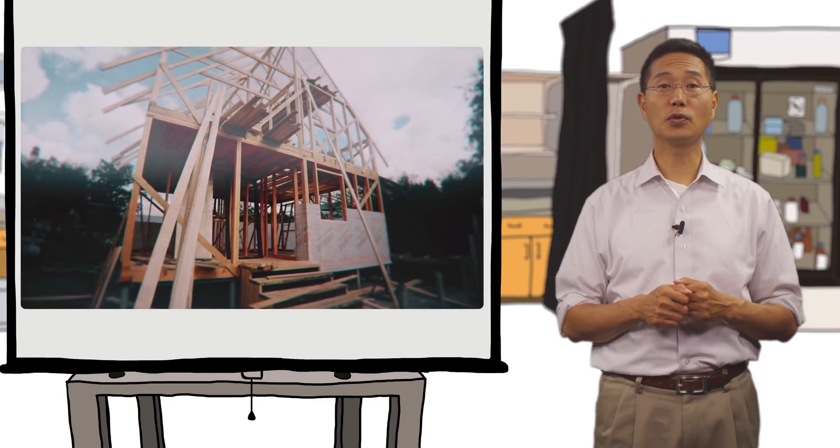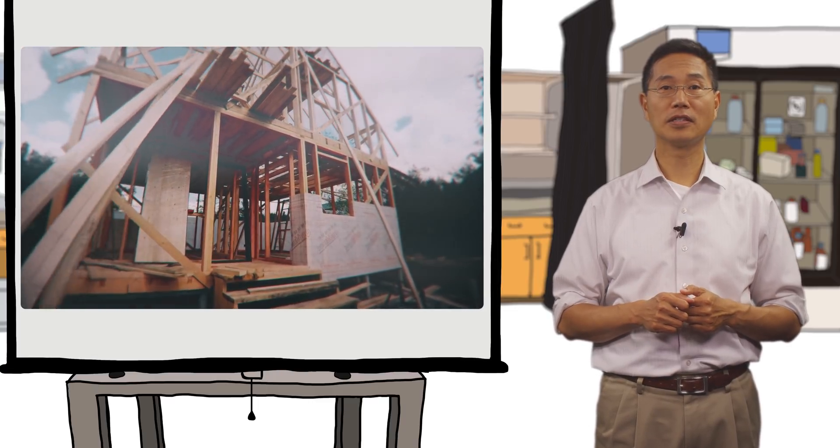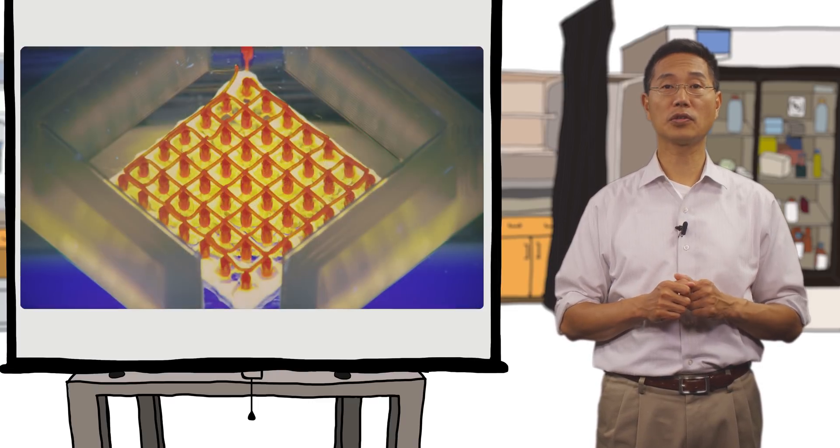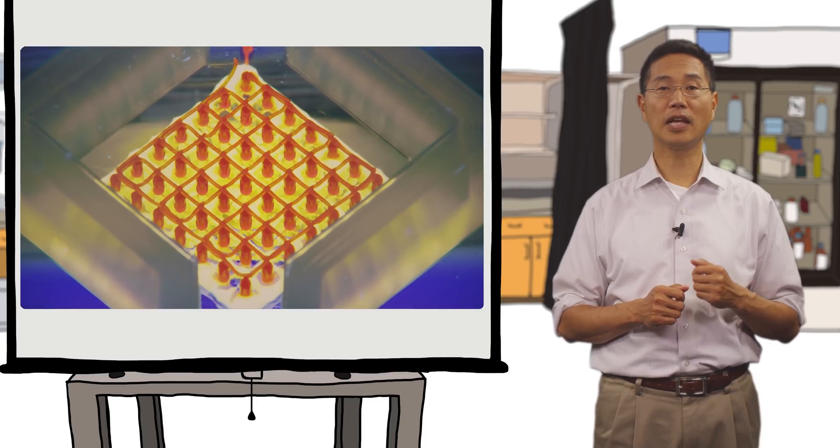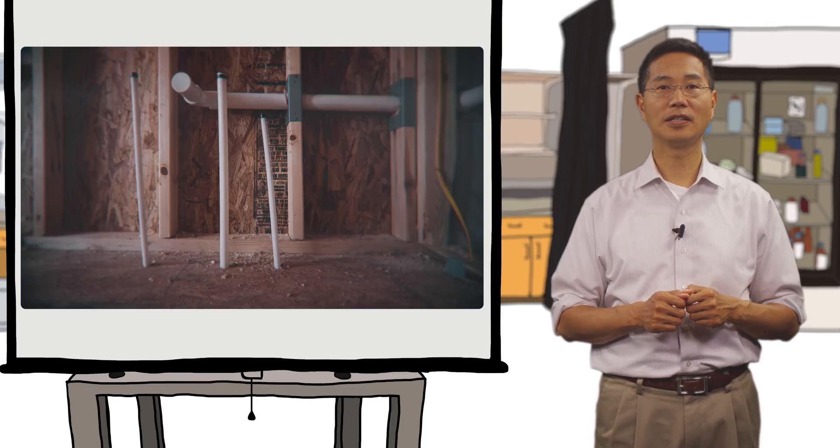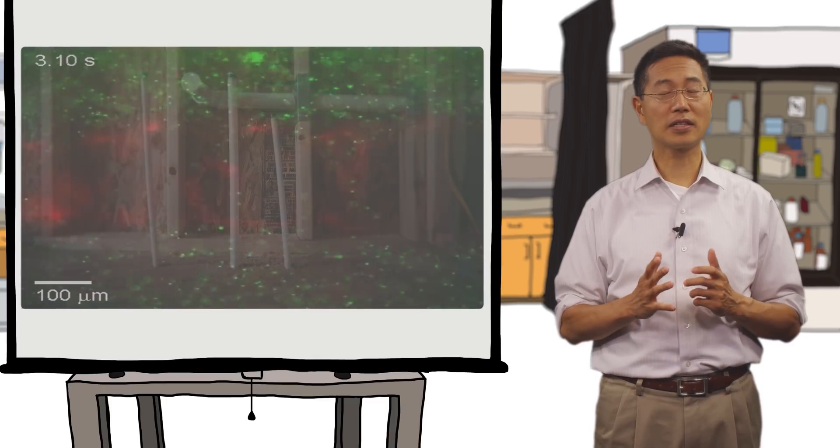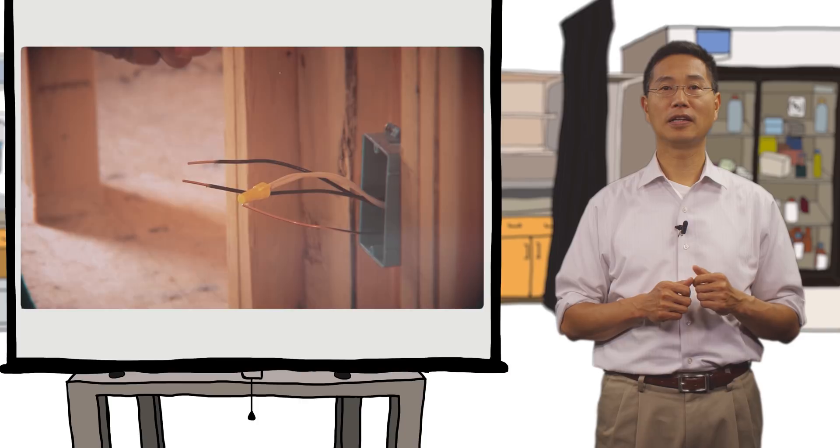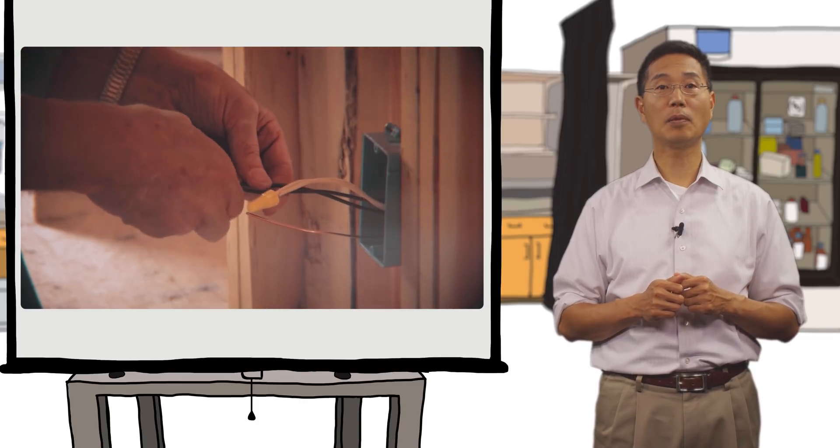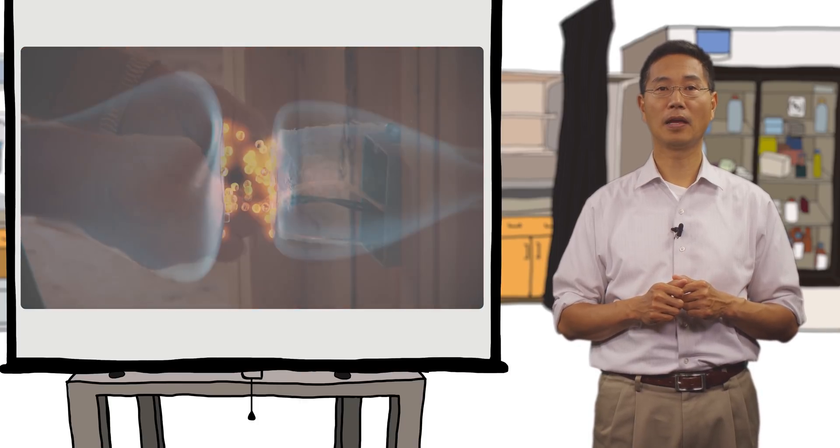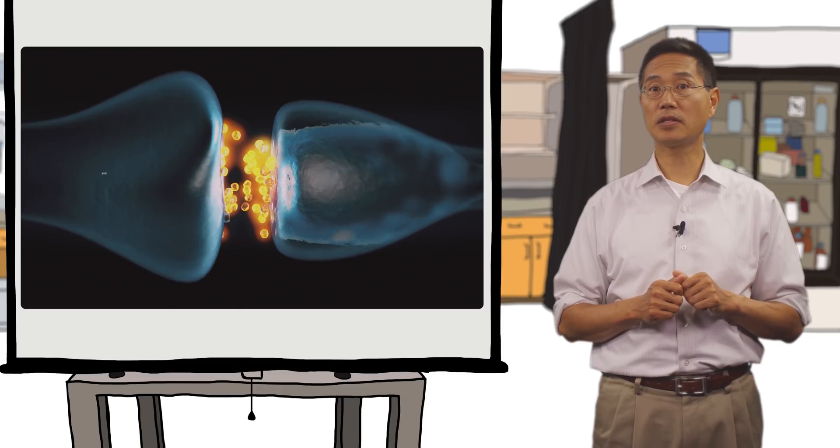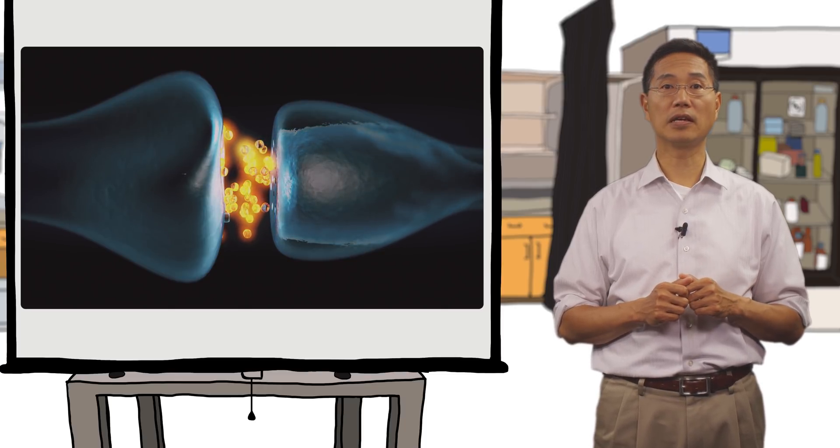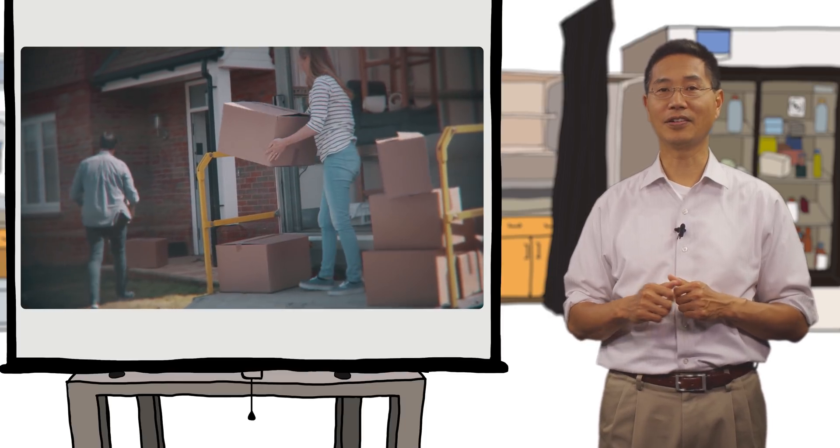Creating an artificial organ is like building a house. First, we have to figure out the structural scaffolding—the materials that help build and support the tissue. Then place the plumbing, which would be the vasculature that delivers nutrients and removes waste products from the organ. Next, we can add the electricity—comparable to an organ's nervous system. And finally, we need to populate the structure with organ-specific cells, just like people living in a house.